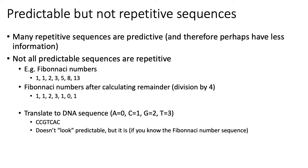Consider a sequence of numbers like the Fibonacci numbers. The Fibonacci sequence starts with one and one, and the next number is always the sum of the previous two — so: 1, 1, 2, 3, 5, 8, 13. That sequence doesn't look repetitive per se, but it is predictable — because once you know the first two numbers, you can calculate the rest of them.